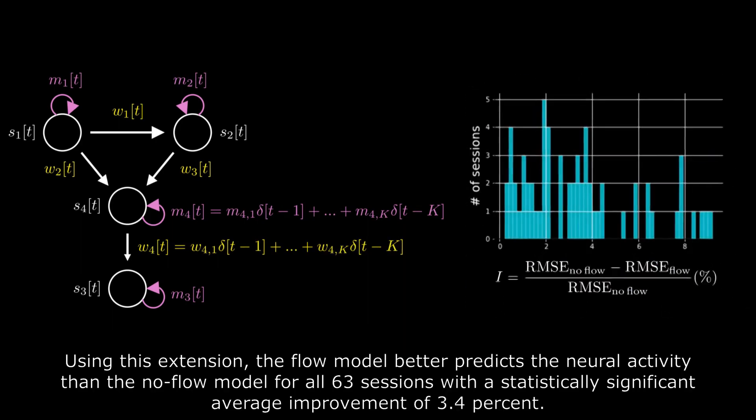Using this extension, the flow model better predicts the neural activity than the no-flow model for all 63 sessions with statistically significant average improvement of 3.4%.